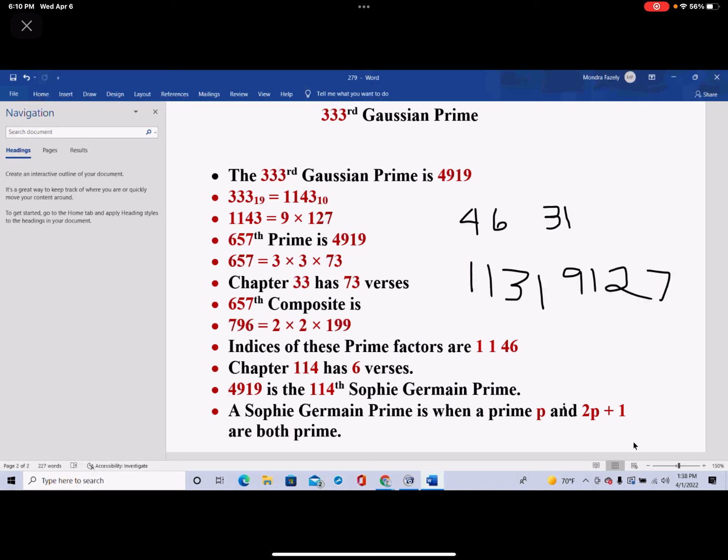But 7 is not a Sophie Germain prime, because 7 times 2 is 14, plus 1 is 15, and 15 is not a prime number. So 2, 3, and 5 are Sophie Germain prime, but not 7.